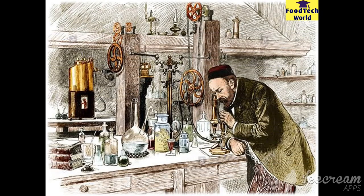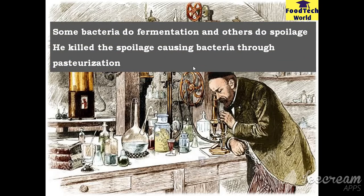One day, some wine makers invited Pasteur to solve a problem they were facing. They could not figure out why certain of their wines were turning bad more quickly. Pasteur, with the help of his microscope, discovered that wine contains different bacteria. Some bacteria help produce the alcohol in the drink from sugars through a process called fermentation, while other bacteria spoil the drink after its preparation.